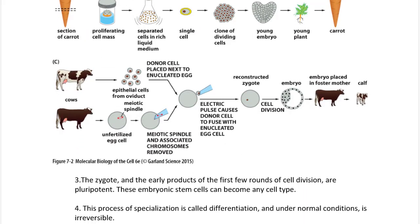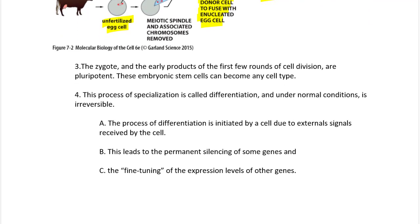In the cow example shown here, epithelial cells from the oviducts are removed and fused with an unfertilized egg through some manipulation, creating a reconstructed zygote. Cell division proceeds to produce an embryo, which is placed into a foster mother to develop into a calf. This demonstrates that a somatic cell with the full set of chromosomes carries all genetic information needed to build a complete organism.